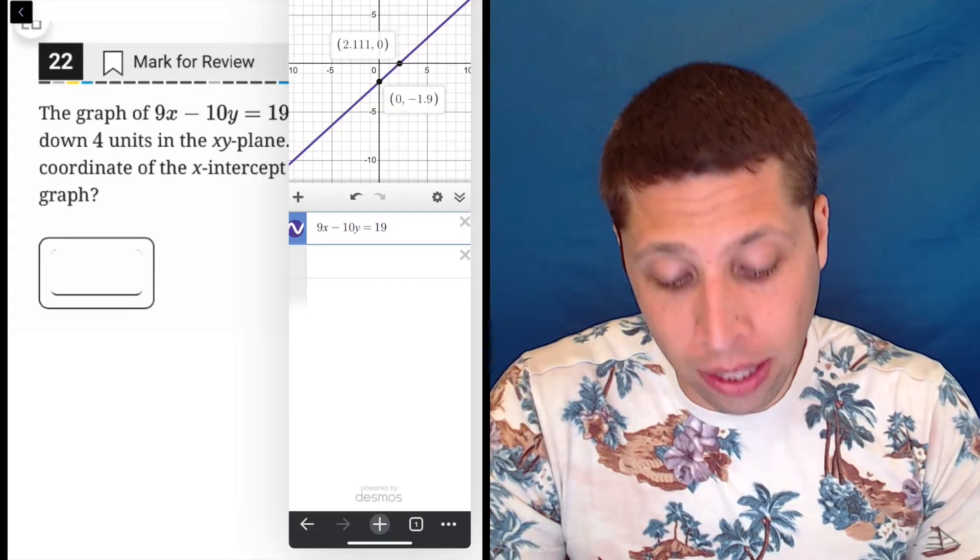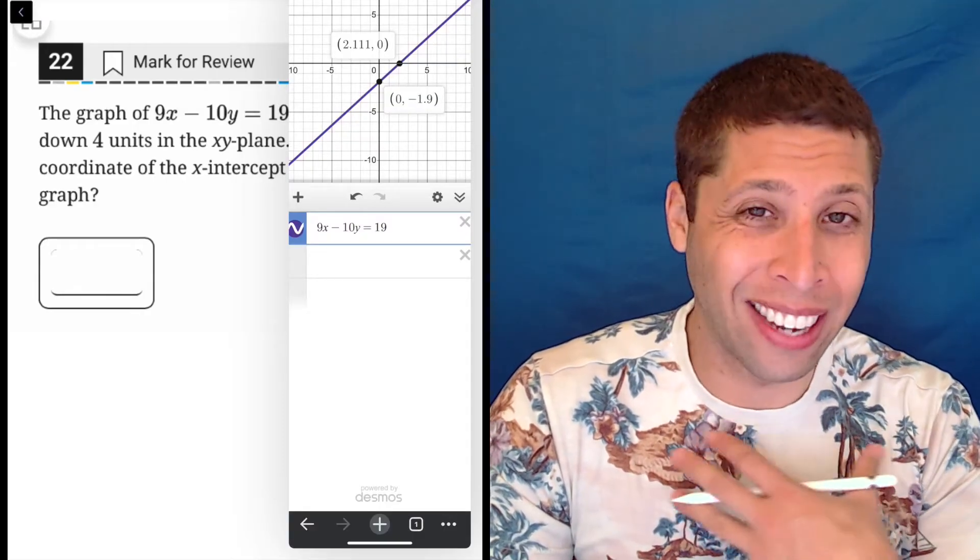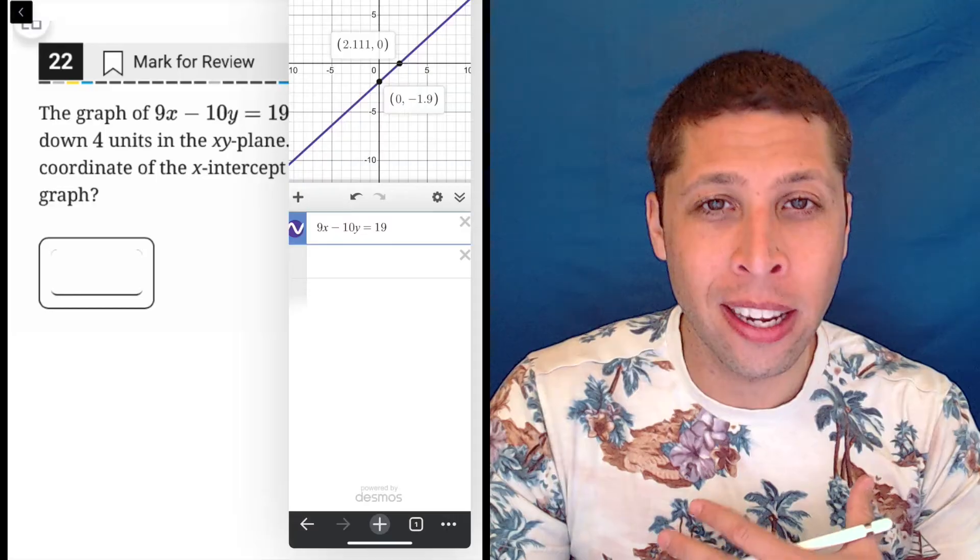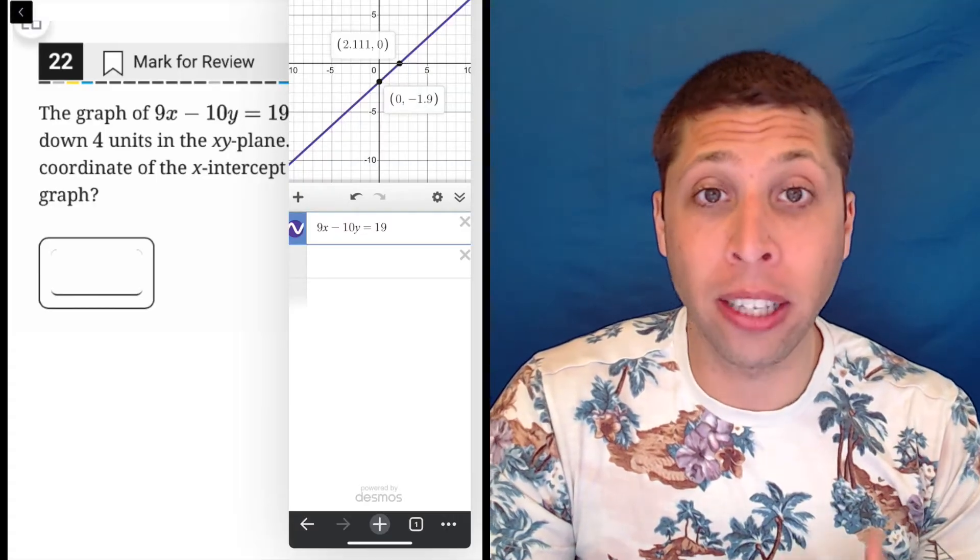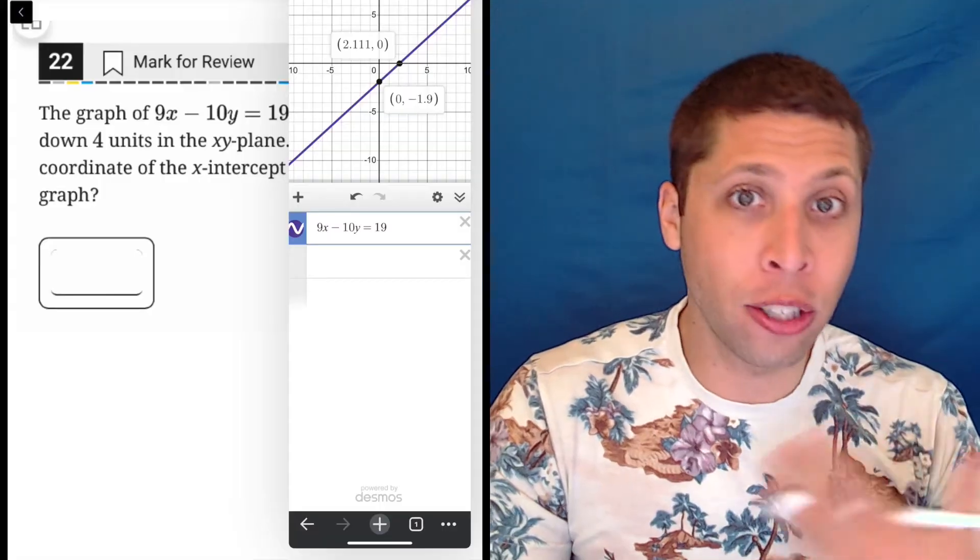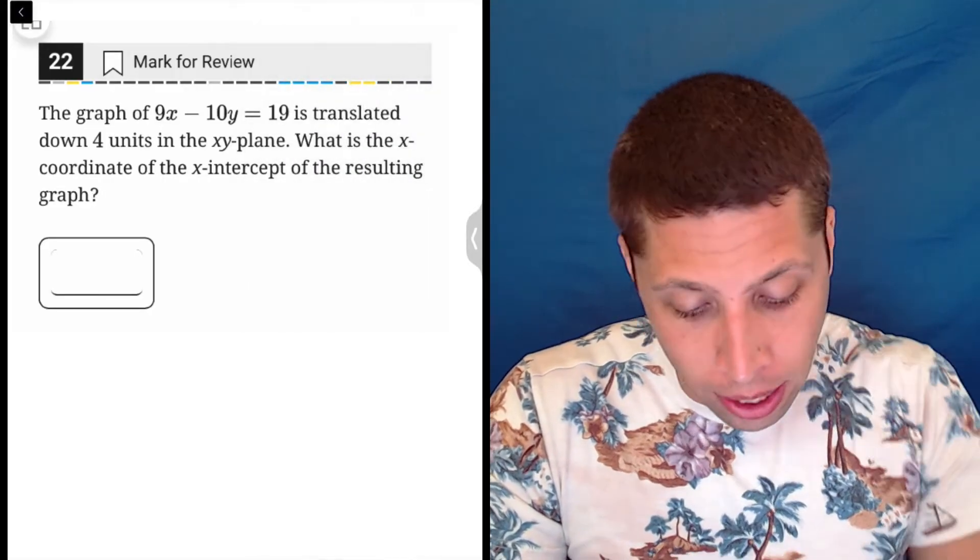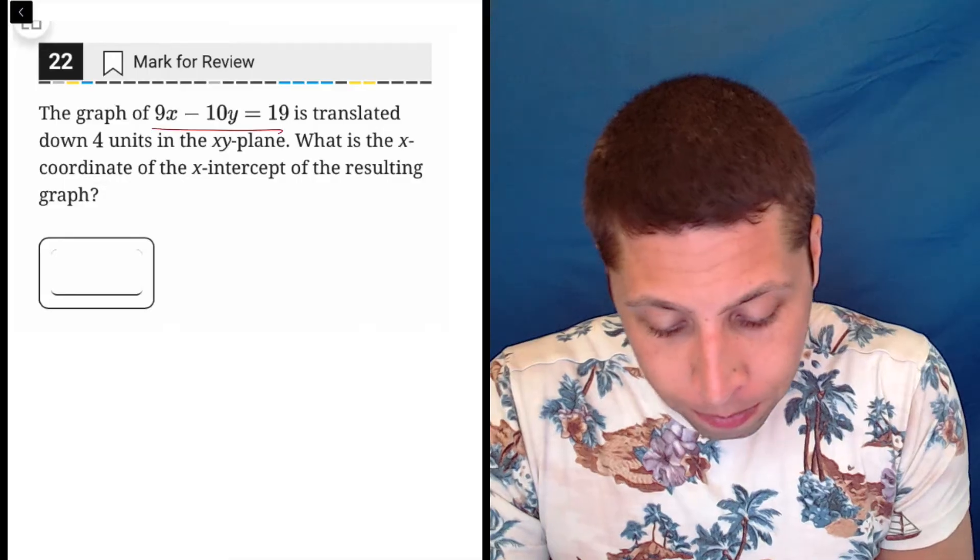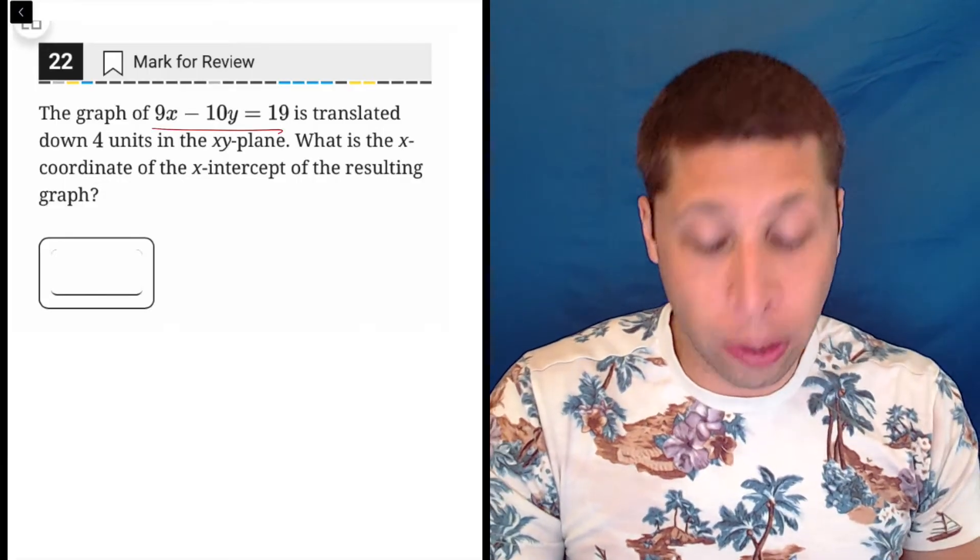But the best thing for me is if I have a line that I don't really quite understand, the best way to understand it better is to get it into Y equals MX plus B format, because then I can do a lot of these changes very easily. So what I might do here is take this original equation and just rearrange it to Y equals MX plus B.